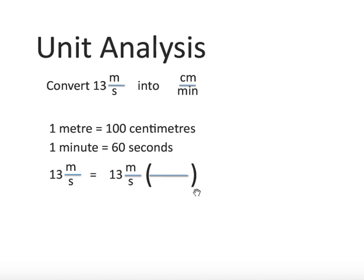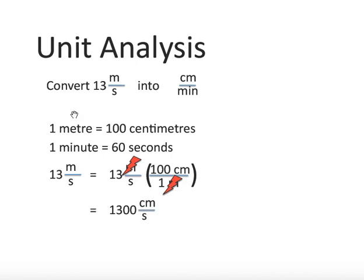The first unit we're going to focus on is meters. The question is: do I write 1 meter over 100 centimeters, or do I write 100 centimeters over 1 meter? Our goal is to get from meters to centimeters, so we write 100 centimeters over 1 meter. Notice that meters and meters cancel out, and we're left with 13 times 100, which is 1300 centimeters per second. We've done one part of the unit conversion.